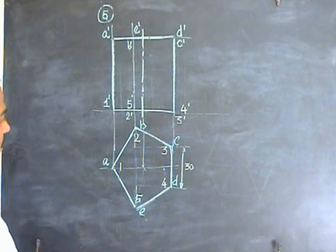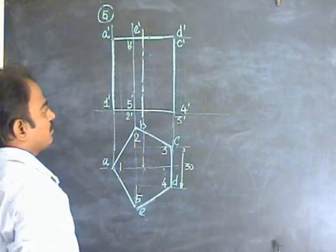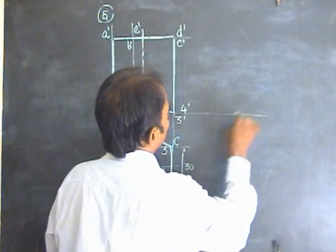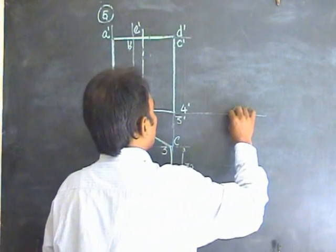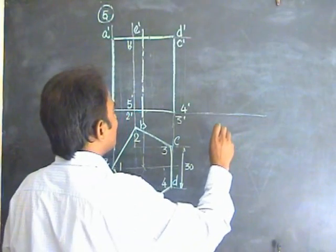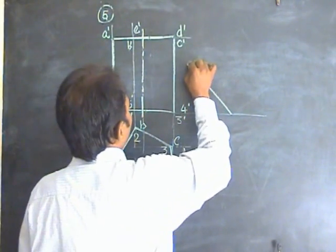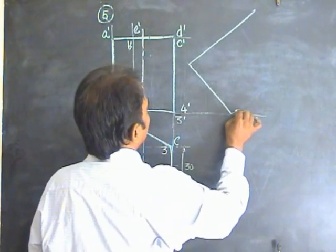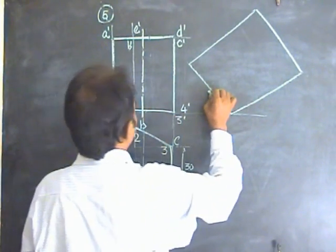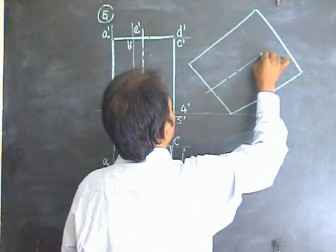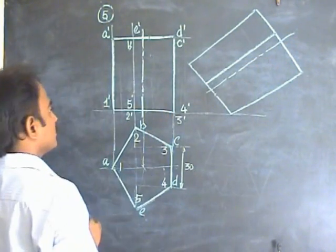This is the front view of the pentagonal prism. A true pentagonal shape will be visible in the top view, and a rectangular pentagonal shape in the front view. Now, take the pentagonal shape such that one side is on the XY line. Since the axis must be inclined at 60 degrees to HP, the easiest method is to put the base at 30 degrees to HP. Take this length and place it here, then redraw this shape.